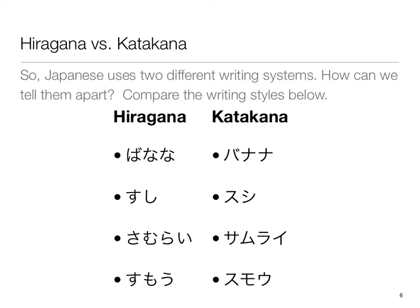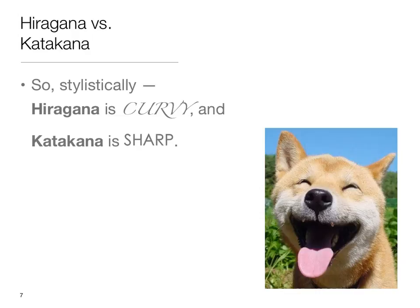Hopefully you picked up on the fact that hiragana looks rather more curvy than does katakana. Notice in the word banana, we have these little loops and curves. Hiragana is much more rounded, more flowing, more curvy than is katakana. In the right-hand column, katakana — if you take a close look, you'll notice these are rather sharper looking. The angles are not at all friendly and curvy as the ones in hiragana. So hiragana looks rather more curvy, katakana more sharp and angular. Stylistically, hiragana is curvy, and katakana is sharp.